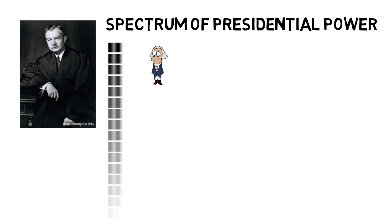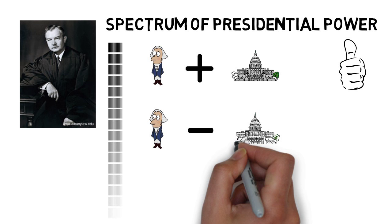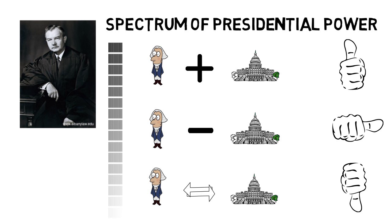Here's the spectrum. When the president acts with Congress's express or implied authorization, that's when the president's power is at its strongest. When the president acts without Congress either granting or denying the president's actions, that's the middle zone where we're unsure of whether the president has the power to do something, unless of course we look at the Constitution. And finally, when the president acts contrary or in opposition to Congress's express or implied will, that's what Justice Jackson calls the lowest ebb — and that's where Youngstown Sheet and Tube comes into play.